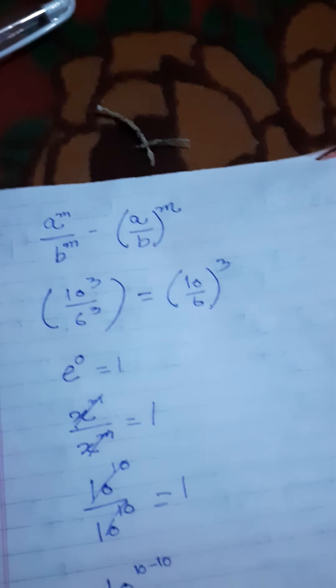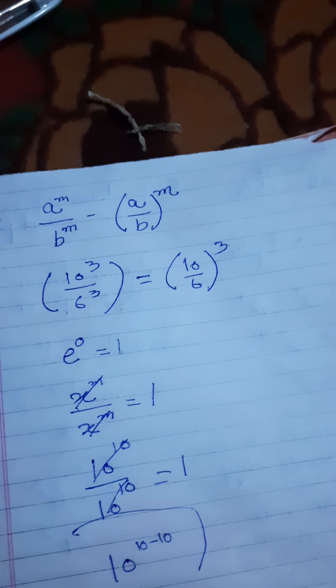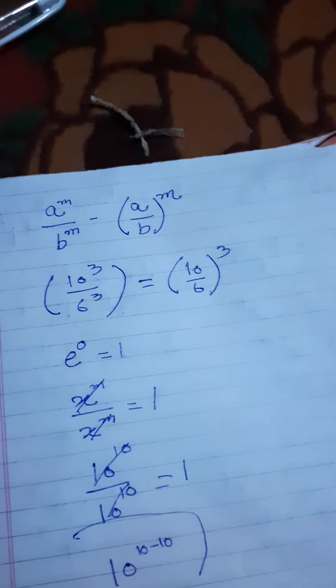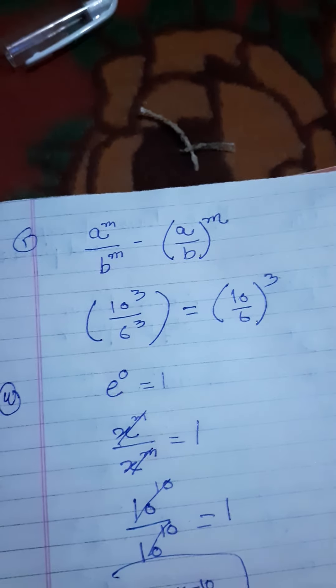10 raised to power 0 should equal one. We can use the formula: 10 raised to power 10 minus 10, that is equal to 10 raised to power zero.